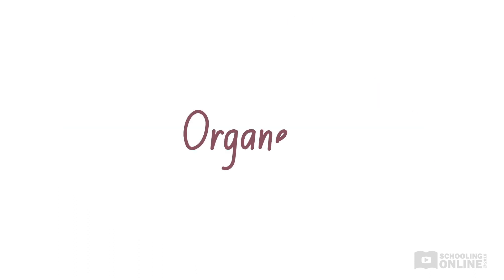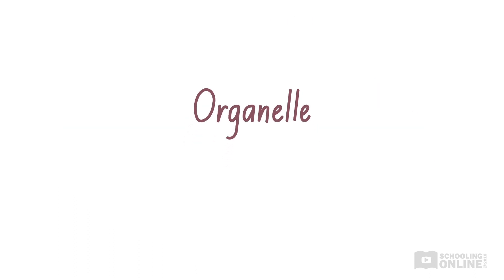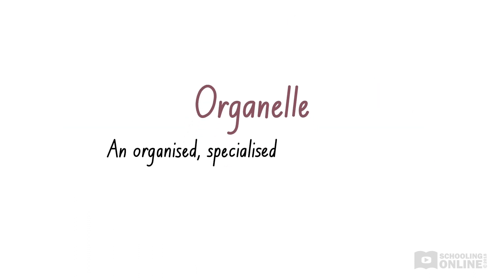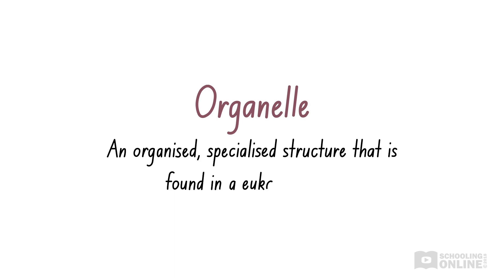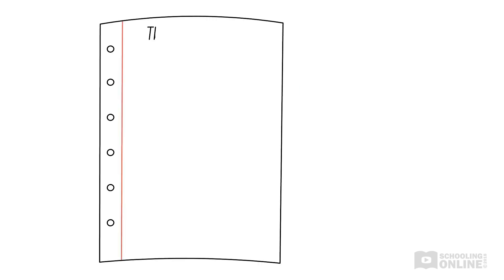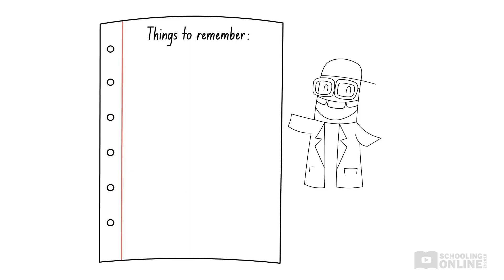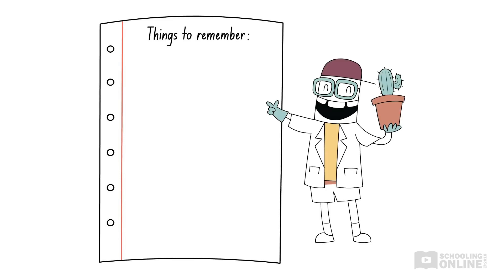Remember, an organelle is an organised, specialised structure that is found in a eukaryotic cell. Some organelles are bound by one or more membranes. In this second lesson on plant cells, we'll continue to explore the structure and function of plant cell components.